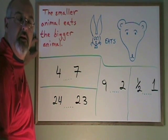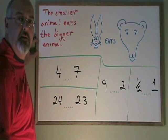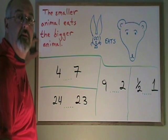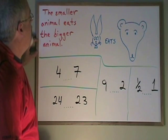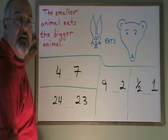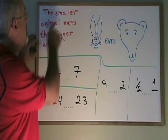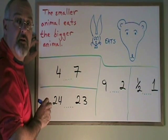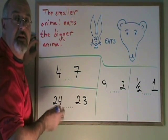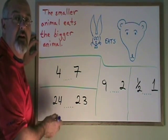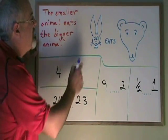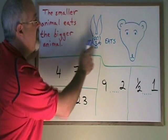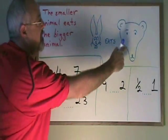Here's another trick to help you remember how to use the less than and greater than symbols. This trick was taught to me by one of my students. She says, when you're using less than and greater than symbols, the smaller animal eats the bigger animal. Now this sounds silly, but the fact that it's silly makes it easier to remember for her. The smaller animal, like a rabbit, eats the bigger animal, like a bear.